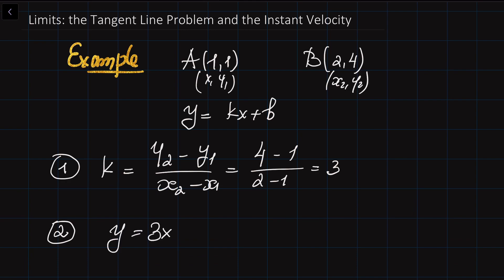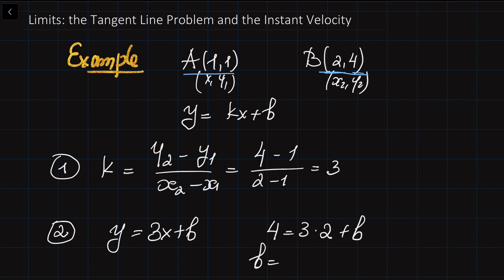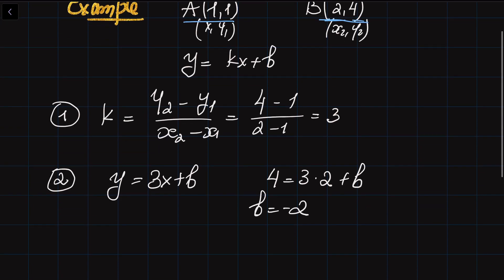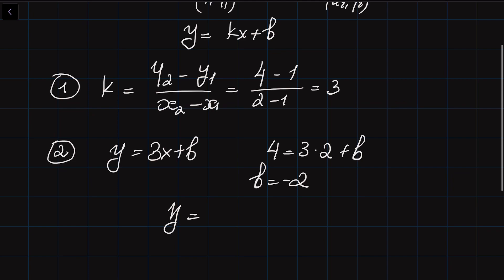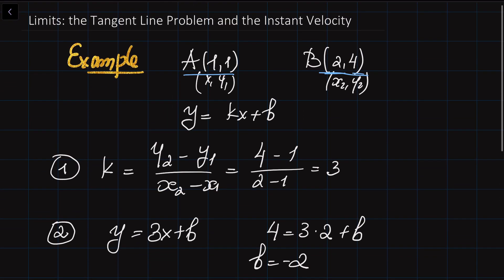This line is passing through either point, so if I plug in the coordinates of point B into this equation, it should work. So: 4 is equal to 3 times 2 plus B, and from here it is clear that B should be equal to minus 2. So the equation of the line passing through points A and B is going to be Y is equal to 3X minus 2.